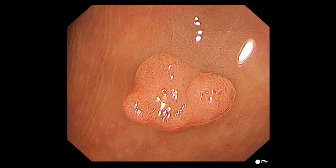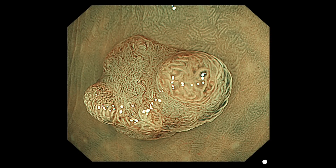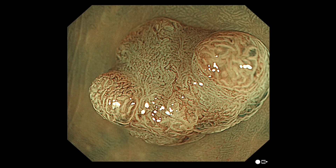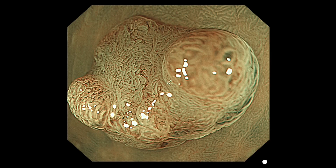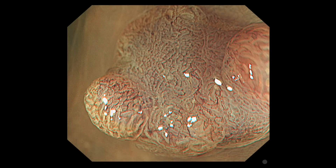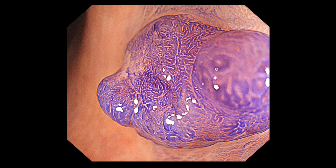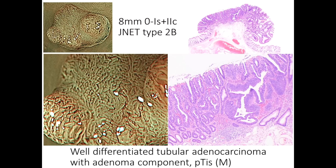Here we present a lesion 8 mm in diameter with a depressed area at the centre. While the elevated areas at the edge show regular vessel and surface patterns, the depressed area at the centre has variable calibre, irregular distribution of vessels, and irregular surface structure, so this polyp is classified as J-Net Type 2B. By staining with crystal violet, Type 5i pit patterns in the depressed area and Type 3L pit patterns in the elevated area are observable. This sessile lesion was removed by EMR, and the histopathological views show well-differentiated adenocarcinoma without any submucosal invasion.